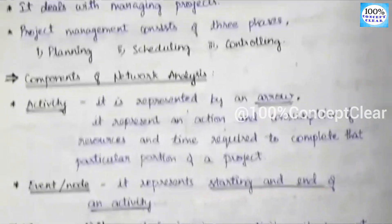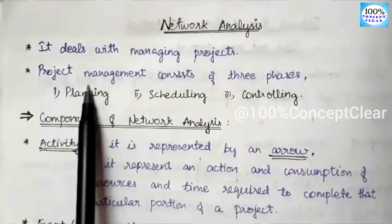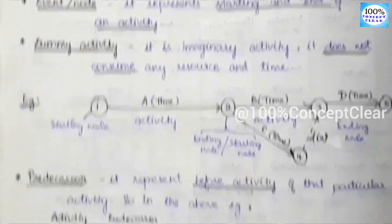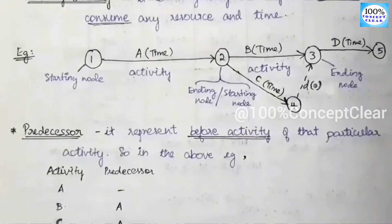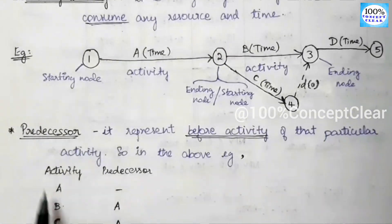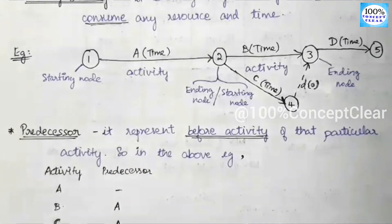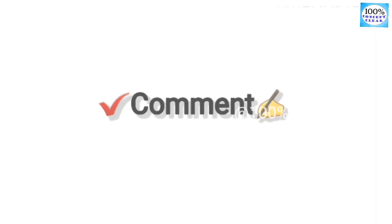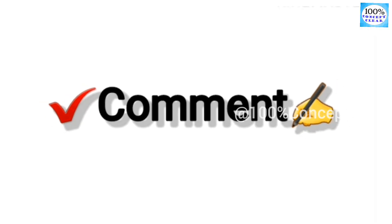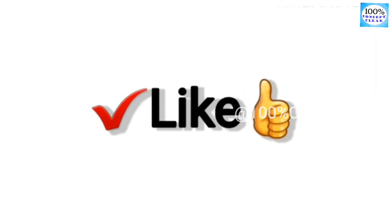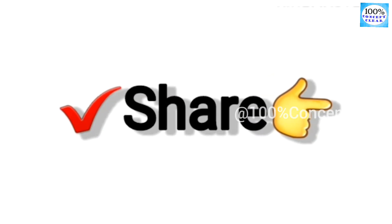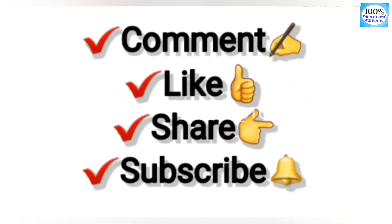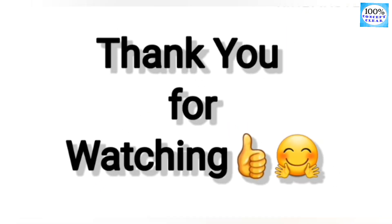In this video we covered the introduction and components of network analysis — activity, event/node, dummy activity, and predecessor — illustrated with a worked example, and discussed the rules for network construction. If you have any doubts, leave them in the comment section. If you found this video useful, like it, share it with your friends, and subscribe to my channel. Thank you for watching.